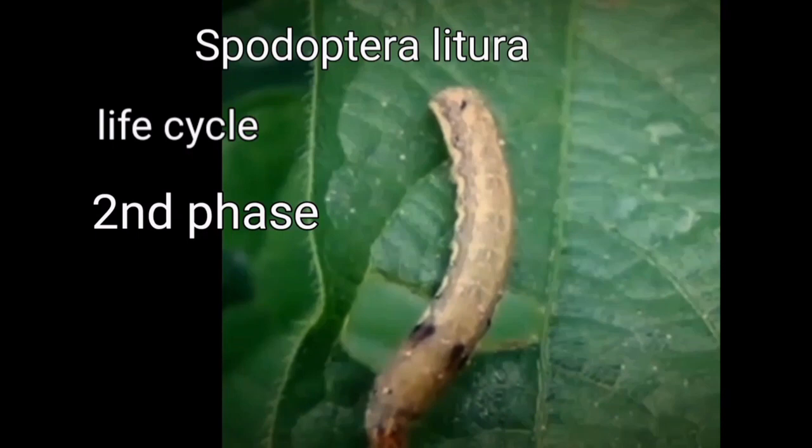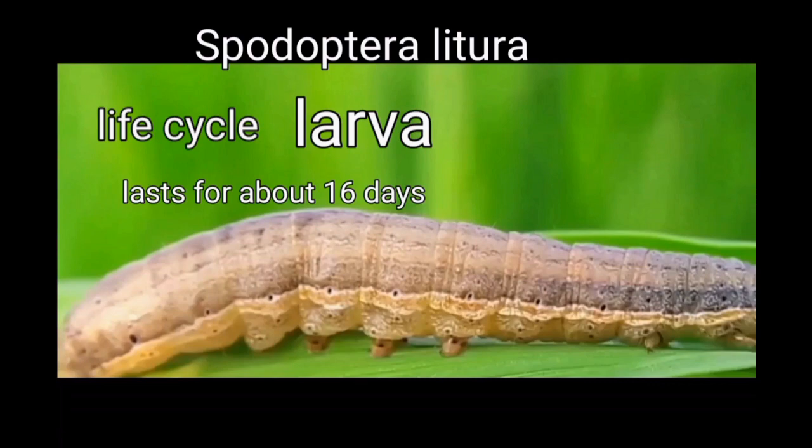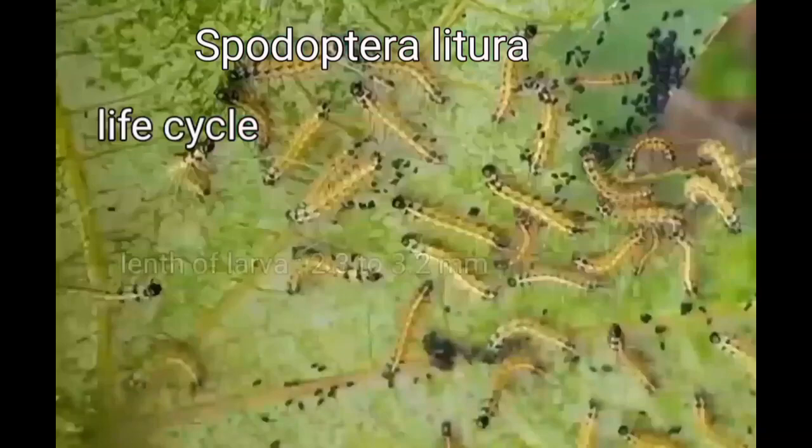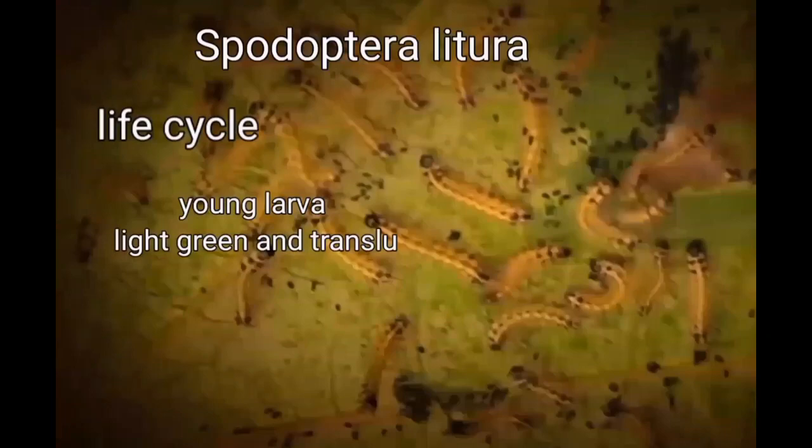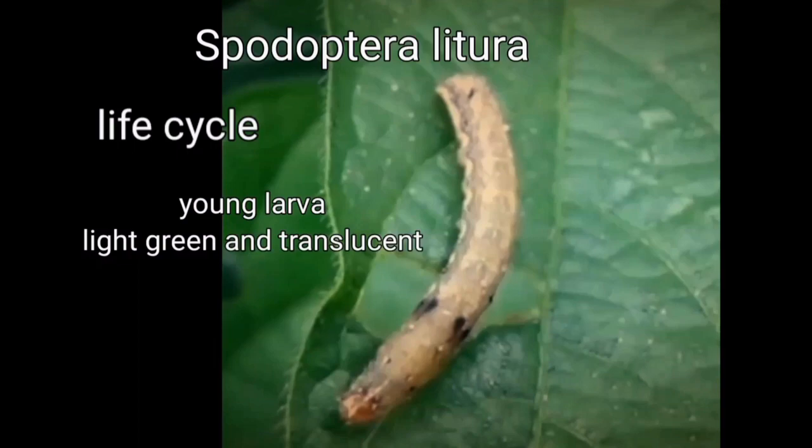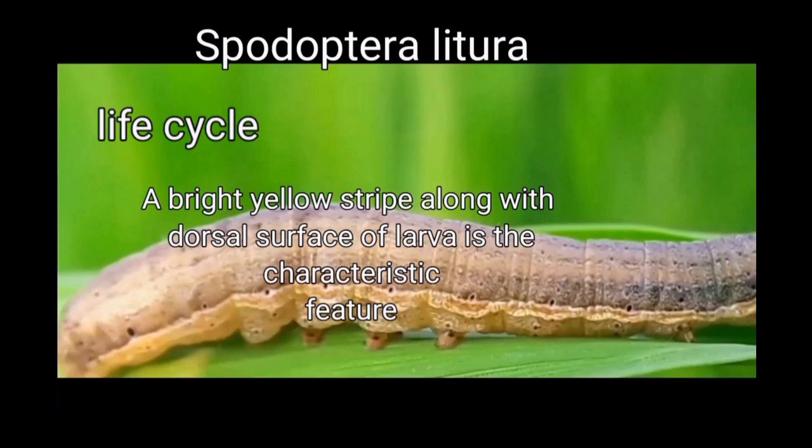The second phase is the larval stage, which lasts about 16 days. Spodoptera goes through six instar phases. Larvae are about 2.3 to 3.2 mm in length. The young larva is light green and usually translucent, whereas older larvae are dark brown in color. During daytime, larvae can be found in the soil. A bright yellow stripe along the dorsal surface is a characteristic feature of the larvae. The larva is the feeding stage — it feeds on leaves, flowers, and fruits.